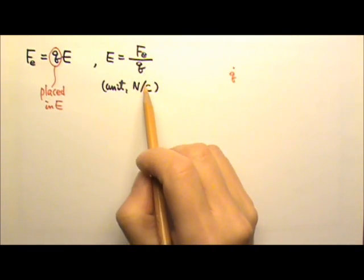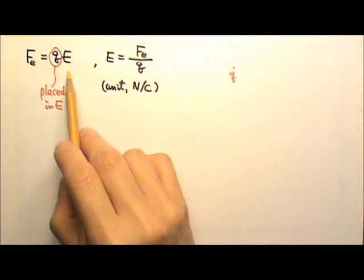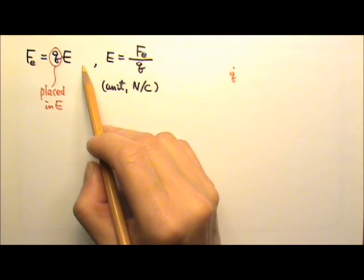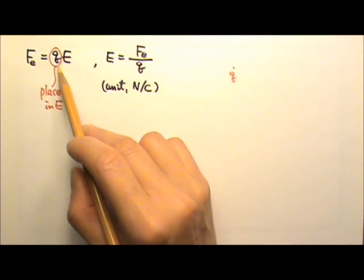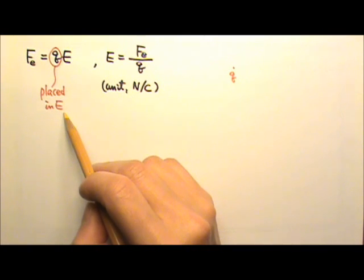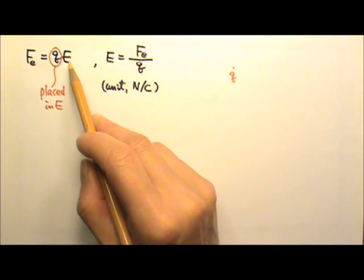Usually, you would see this equation written as F equals to QE, and we can use it for a charge placed in an electric field. This Q here is the charge that is placed in the field, not the charge that produces the field. This field E is produced by some other charges.